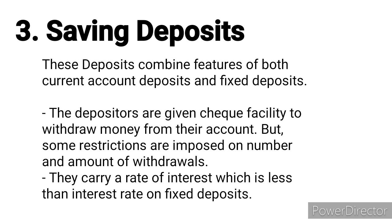The last type is savings deposits, which combine features of both current account and fixed deposits. Depositors are given cheque facility to withdraw money, but some restrictions are imposed on the number and amount of withdrawals to discourage frequent use. For example, ATM transactions have an upper limit — you may withdraw only a certain number of times per month, and additional withdrawals incur a charge. The interest rate on savings deposits is less than that on fixed deposits.